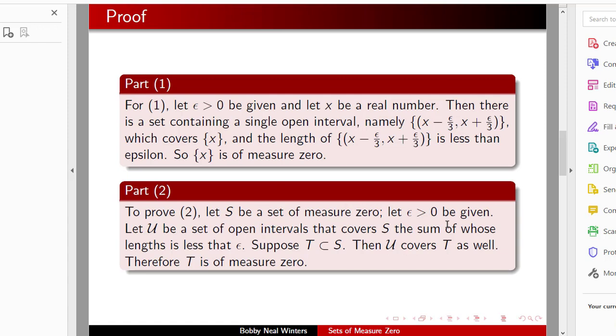For one, we let epsilon greater than zero be given, let x be a real number. Then there is a set containing a single open interval, namely x minus epsilon over three, x plus epsilon over three, that covers the set that contains only x. The sum of the length of the one interval is less than epsilon. So the set containing x is of measure zero.